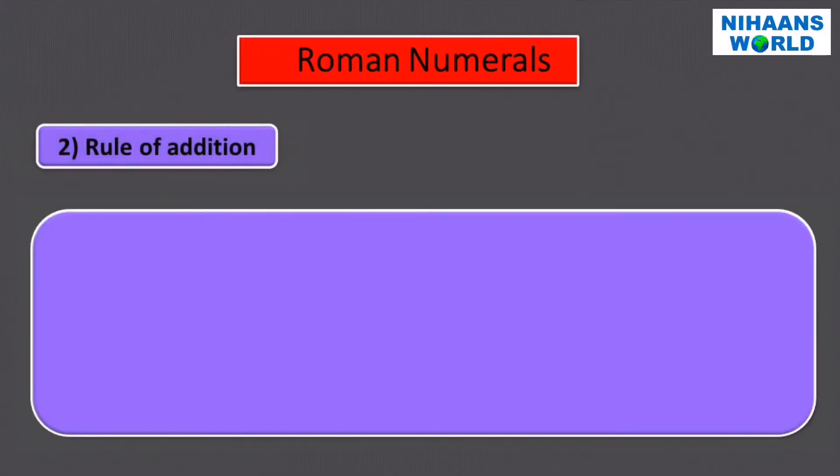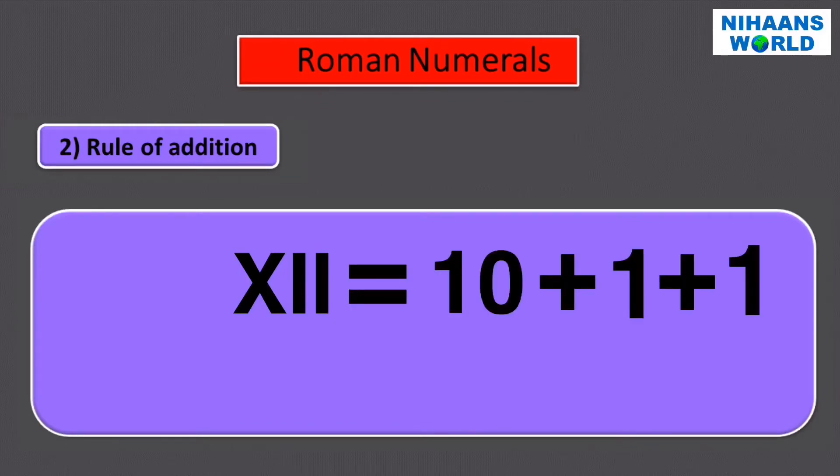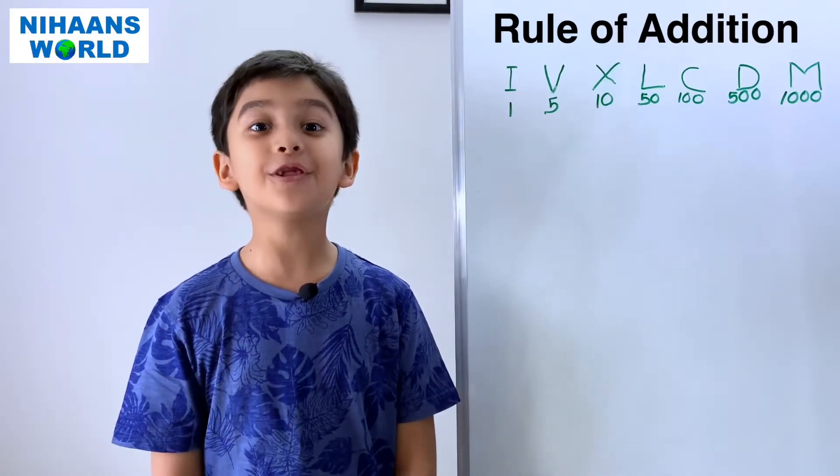Rule two: Rule of Addition. If a symbol of smaller value is written to the right of a symbol of higher value, we add the smaller value to the greater value. Let's see example X I I. X has the value of ten and I I has the value of two. So, the value is twelve.